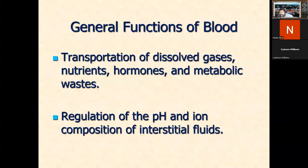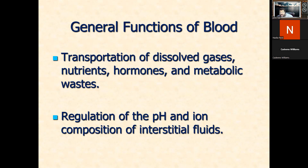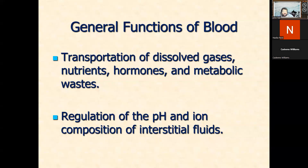Nutrients - obviously whatever you digest in the intestines has to be taken from the intestines and spread to the rest of the body, which means the easiest way to do this is to drop it in the blood and it gets carried all about. Hormones - most of your hormones are transported in the blood as well. The lovely thing about blood is that you can make a hormone in some part of the body - for example, your thymus gland in your neck, you can make thymosin and other hormones. Your pituitary gland in the head - you can make hormones there and move them into the blood and then they can spread to the entire body. So everything doesn't have to be local. And of course, our metabolic waste.